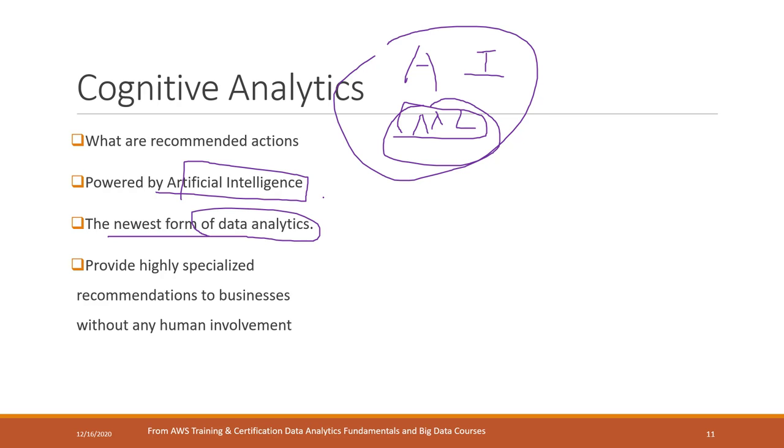Let's come back to our cognitive analytics. Cognitive analytics provide highly specialized recommendations to businesses even without those human involvement. In today's lab, we will use QuickSight again to analyze the data in the data warehouse. We will connect QuickSight with Redshift. You're not going to create Redshift instance because Redshift is very expensive. I will create the Redshift instance for you. You will see that Redshift do have some AI functions that can provide you some insight automatically.